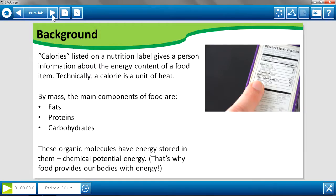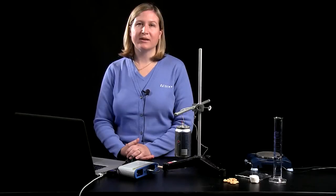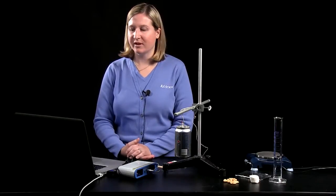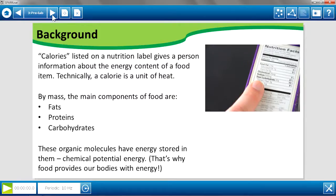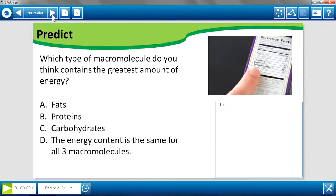You can have students investigate a nutrition label and look at the components by mass, and they should be able to discover that fats, proteins, and carbohydrates are the main components of foods. And you can ask them to then predict which one of those they think has the greatest amount of energy.